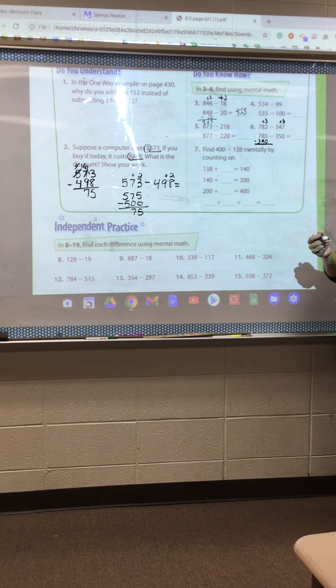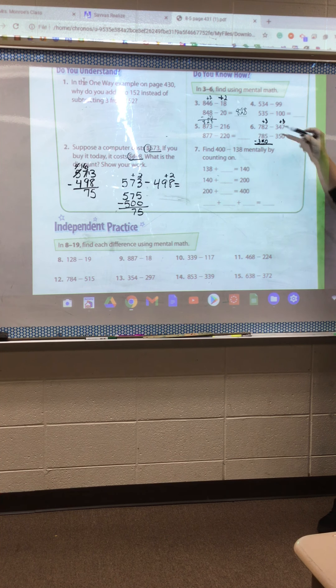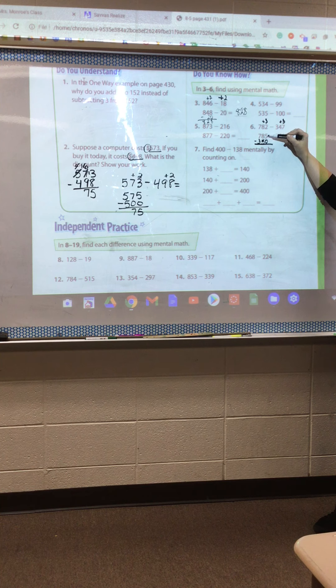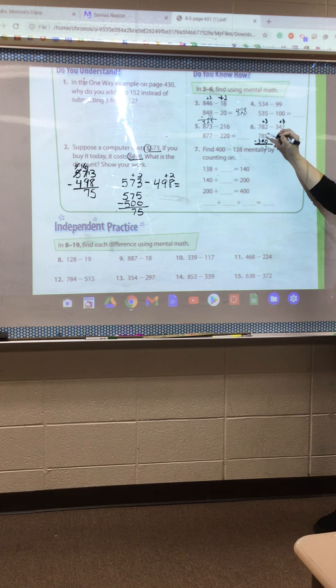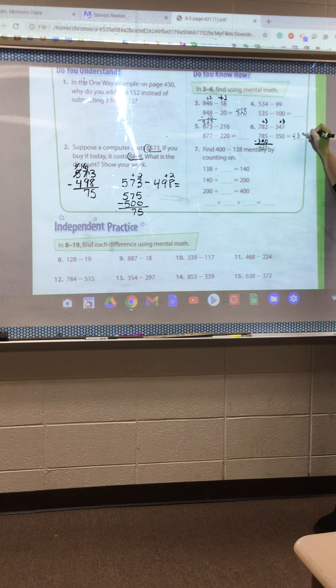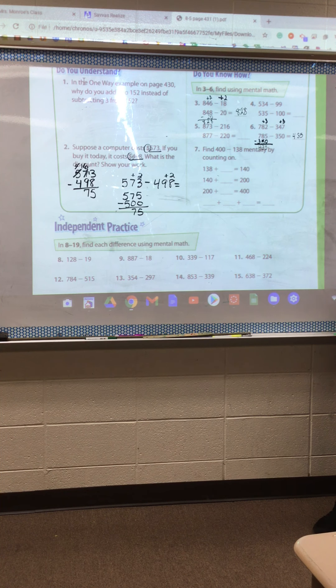Make sure when you're stacking, here's the other thing that we need to make sure of. That we have our ones over our ones, our tens over our tens, and our hundreds over our hundreds. You have to really watch that. Because you don't want to be subtracting the wrong thing. So five minus zero is five. Eight minus five is three. Seven minus three is four. So my answer is 435.